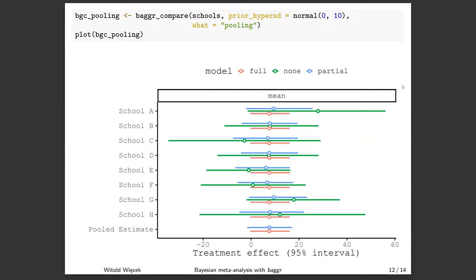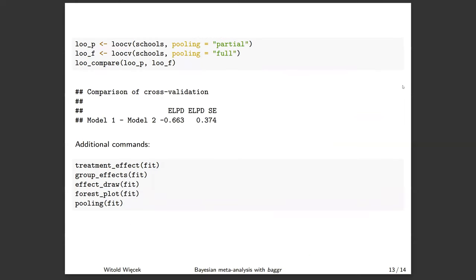But it also makes sense to test for this formally. So here are three lines where we build leave-one-out cross-validation models, which are metrics of predictive performance. They're closely related asymptotically to information criteria that you might know from other modeling tools and from outside of meta-analysis. In this case, I measure leave-one-out cross-validation for partial pooling model and full pooling model, and then I do a one-liner comparison, which tells me that there is indeed a slight preference for fixed effects model, which we just saw visually. This model has fewer parameters and fits similarly to data.